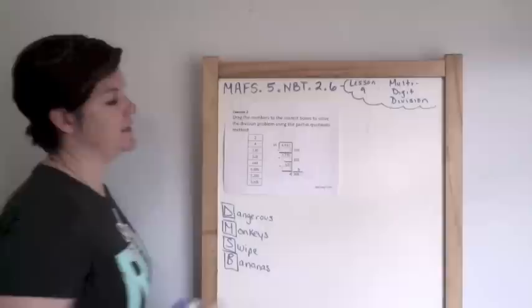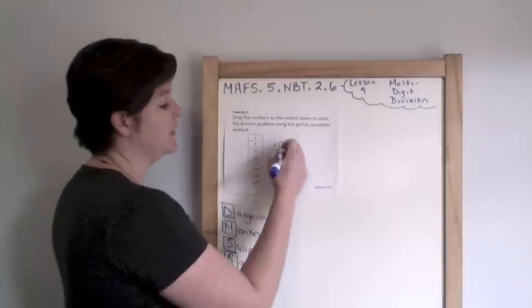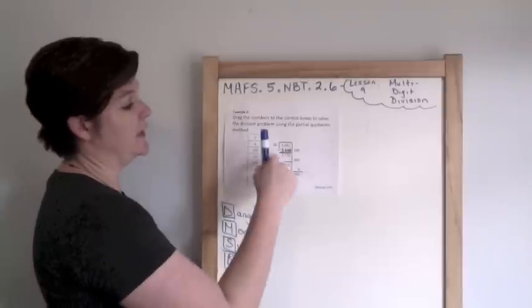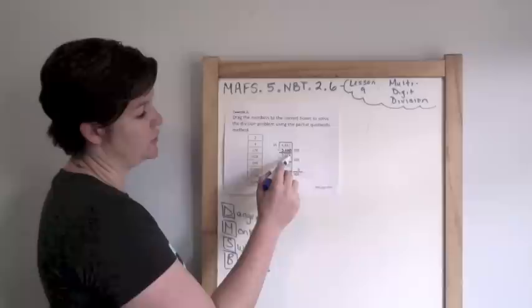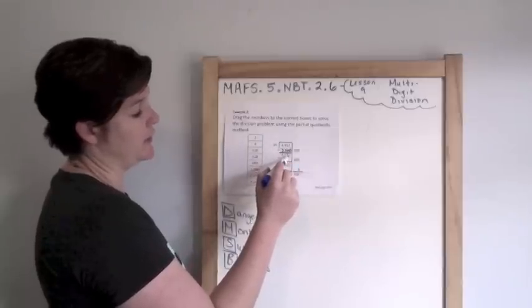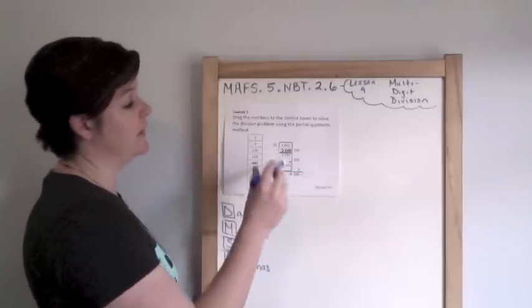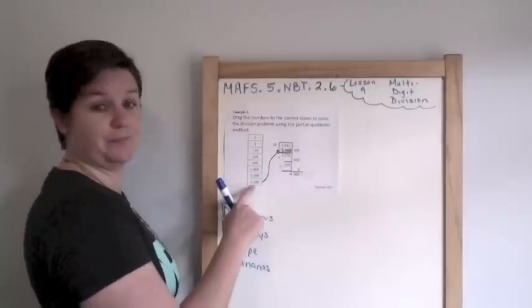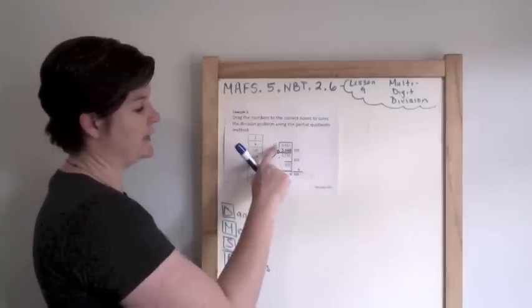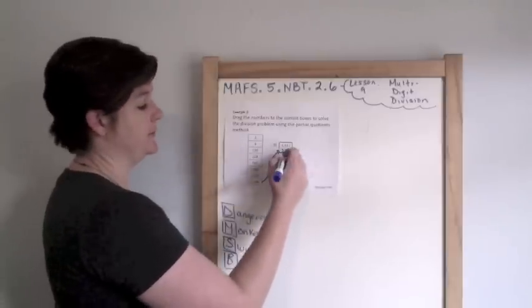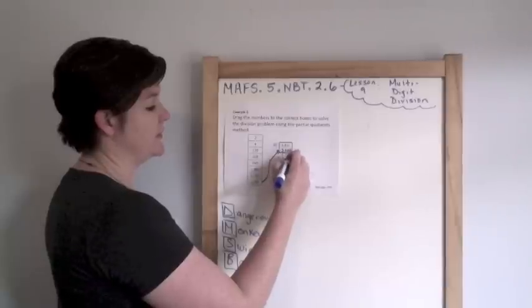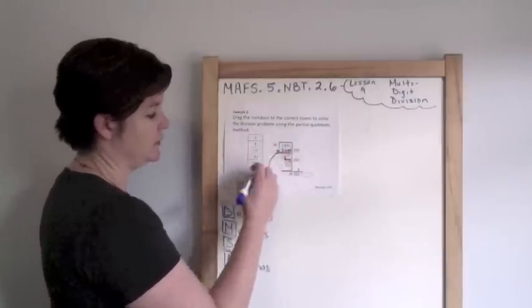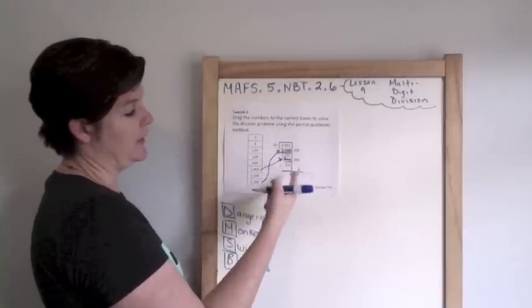So this student multiplied 16 times 200, which would be 32,000. I know that because 16 times 2 is 32, and then I added two zeros. When they subtracted they would do 49,232 minus 32,000, which equals 17,232. That matches up, so this would go here. Now they multiplied 16 times 100 to get this part, so 16 times 100 would be 1,600. When we subtract you would get 15,632.